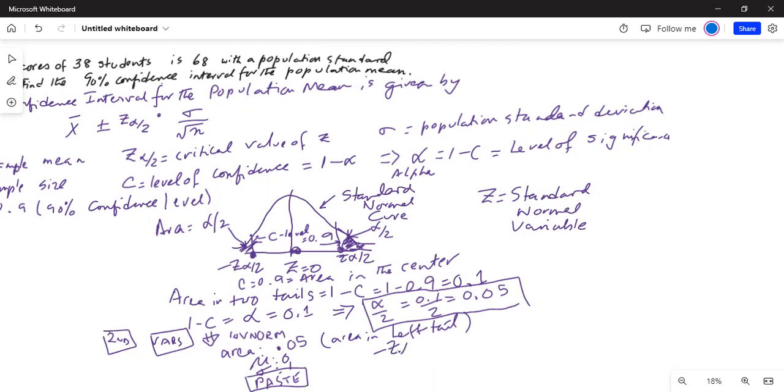My mu is 0 and sigma is 1. Then I paste. Whenever I'm on paste, I hit enter twice. And it is minus 1.645. By symmetry, because the normal curve is symmetric, z alpha by 2 in the right tail is equal to 1.645.